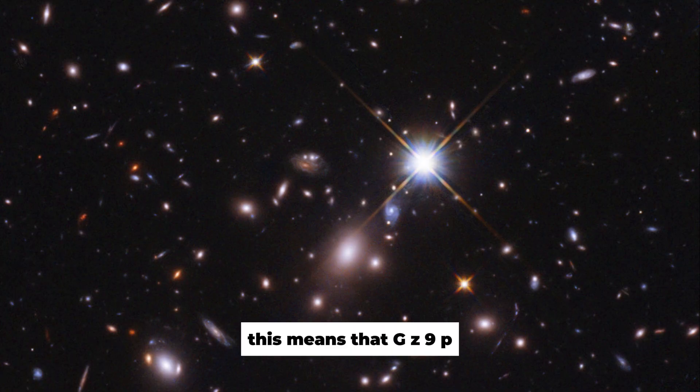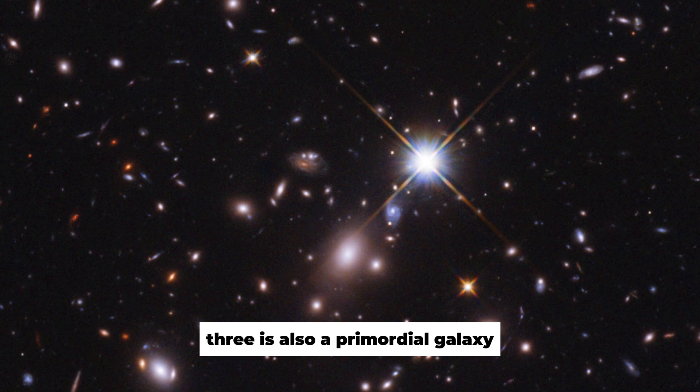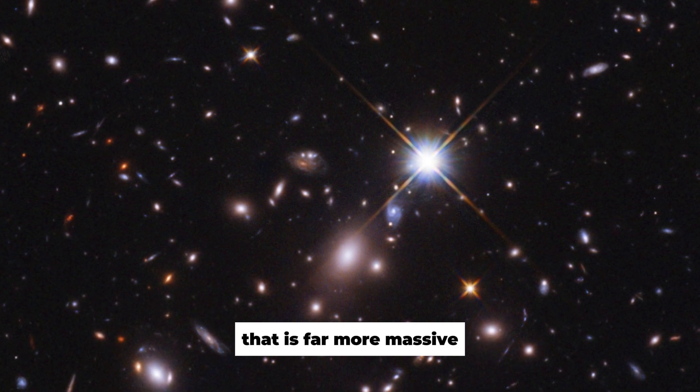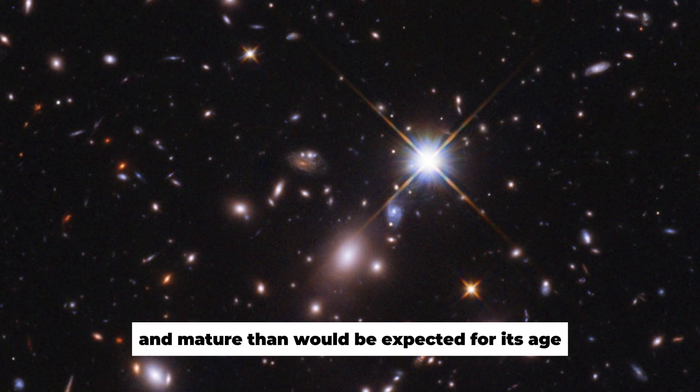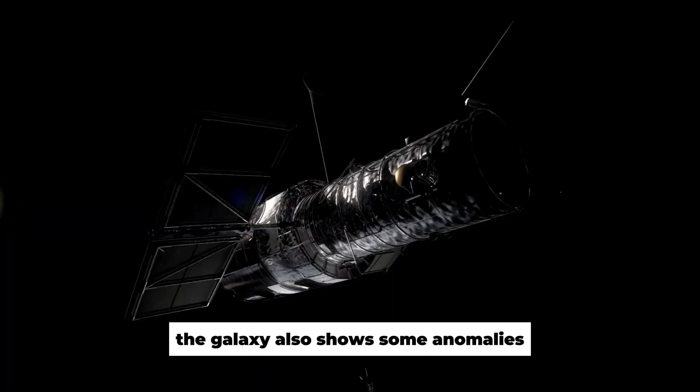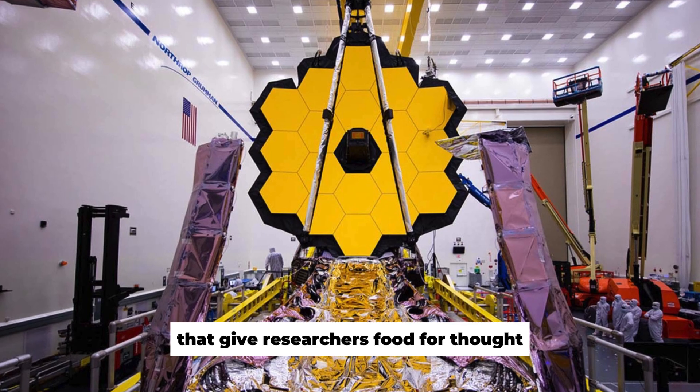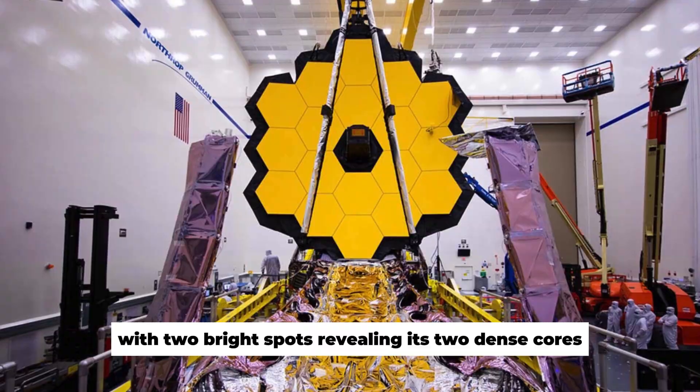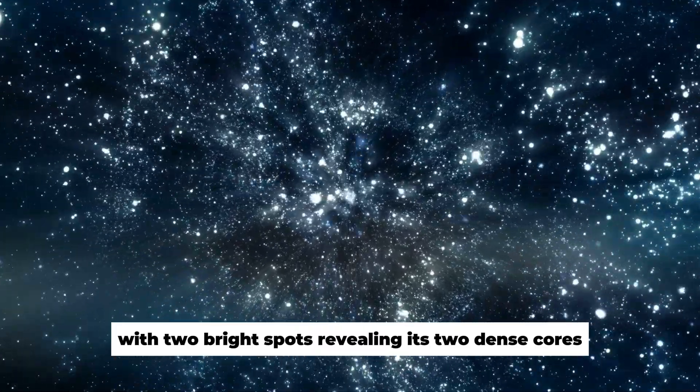This means that GZ9P3 is also a primordial galaxy that is far more massive and mature than would be expected for its age. The galaxy also shows some anomalies that give researchers food for thought. It has a strange shape with two bright spots revealing its two dense cores.